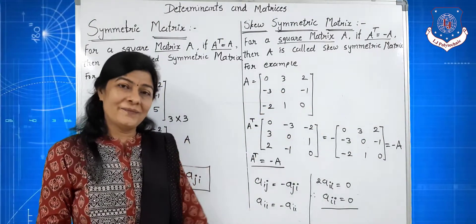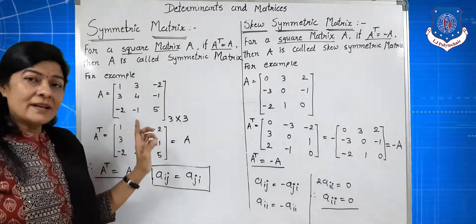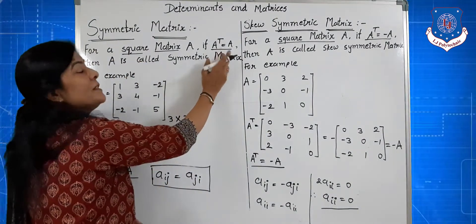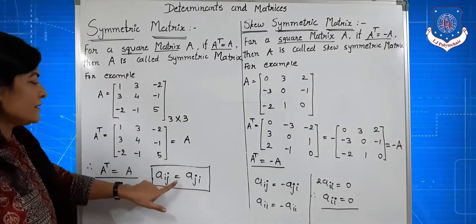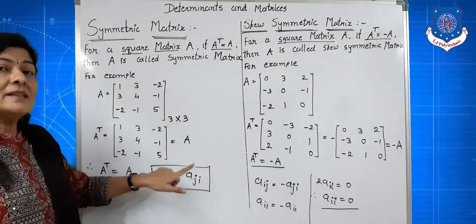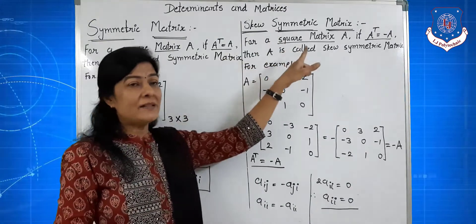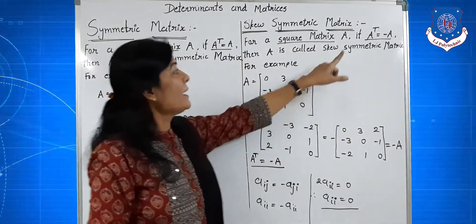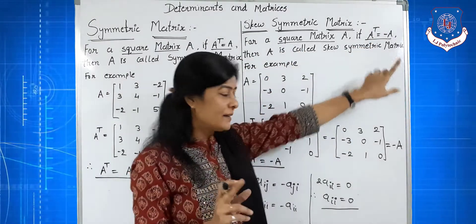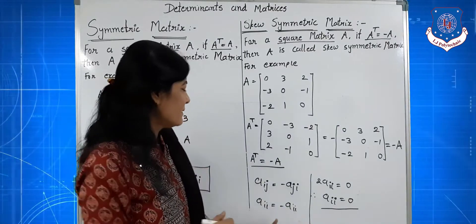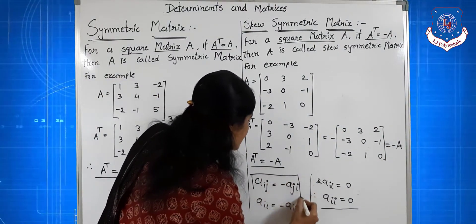To summarize: for a symmetric matrix, A transpose equals A and Aij equals Aji. For a skew-symmetric matrix, A transpose equals minus A and Aij equals minus Aji.